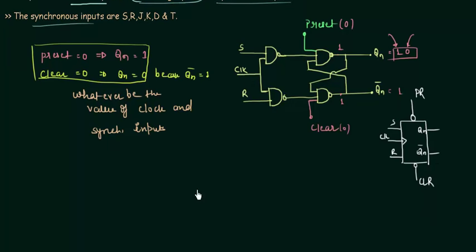Now we will see the truth table in which the inputs are preset, clear, output is QN. Two variables, thus we are having four combinations: 0, 1, 1, 0, 1, 1. Now let's see what will be the output depending upon these conditions.